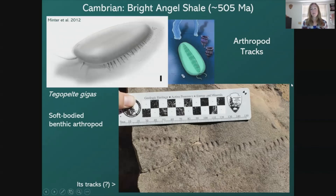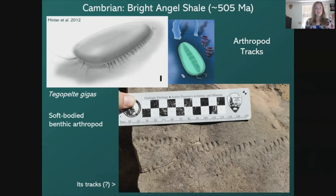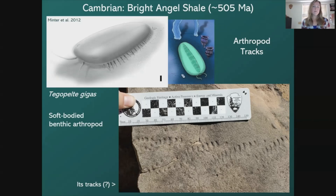Here's another trace fossil from the Bright Angel Shale — an arthropod trackway, where an arthropod was walking along the surface of the seafloor and made these footprints. An example of what might have made this is Tegopelte gigas. Tegopelte was not a trilobite but was similar — a soft-bodied benthic arthropod that spent all its time on the seafloor and didn't have eyes. We don't have the body fossil found in the Bright Angel Shale, but we have the potential tracks to suggest this arthropod may have been present.